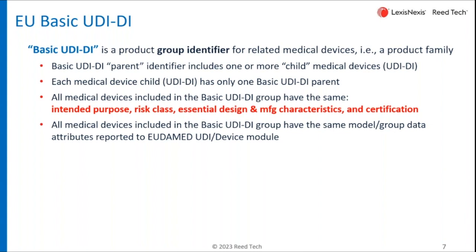But it can have multiples — it can have 20, 50, 100, or technically 1,000 different devices, all part of that particular Basic UDI-DI group. Now, for every individual device, it has to have one and only one parent, so you can't have a particular device sitting in two different groups.